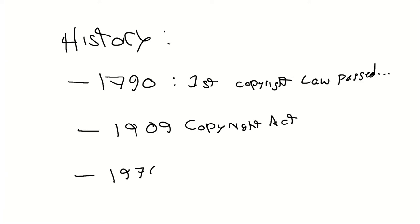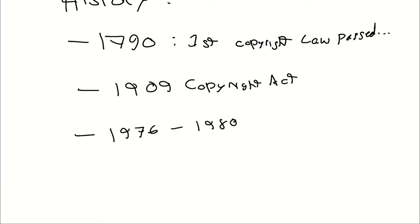Then in more modern times, between about 1970 and 1980, copyright law was revised to include computer-related material — like software and databases that exhibit authorship or original expressions of ideas. Also very important was that the fair use doctrine came to be here.